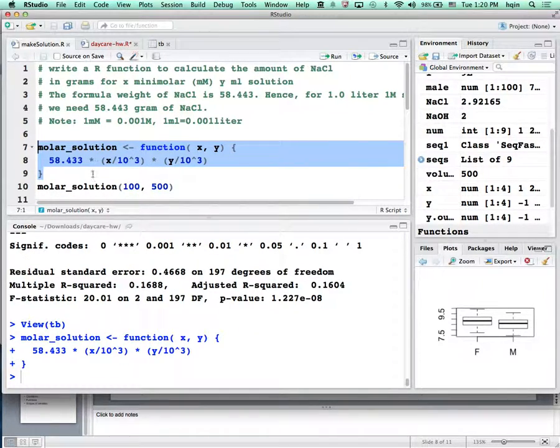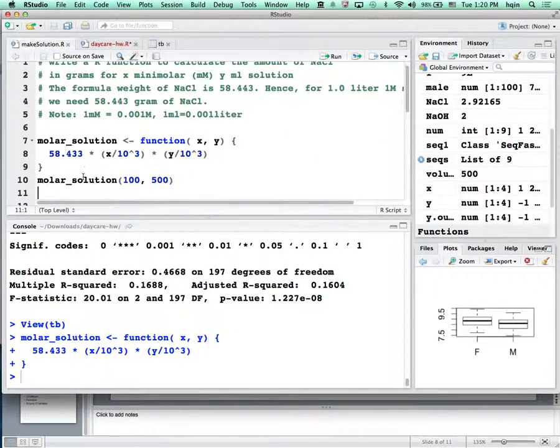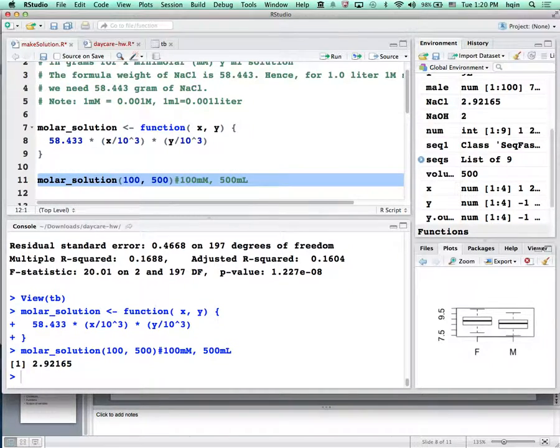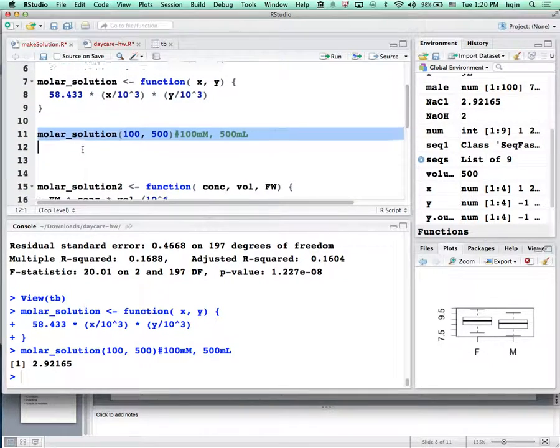I highlight and run it to test this function. If I make 100 millimolar, 500 milliliters, how much sodium chloride do I need? I need 2.92 grams.